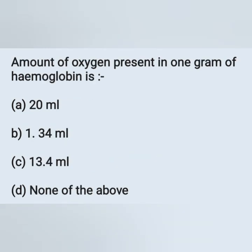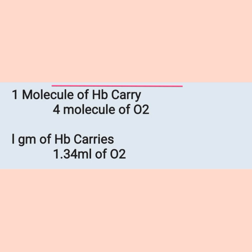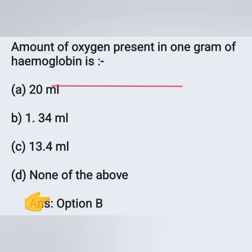Next question: amount of oxygen present in 1 gram of hemoglobin is? Options: A) 20 ml, B) 1.34 ml, C) 13.4 ml, D) none of the above. One gram of hemoglobin can carry 1.34 ml of oxygen. Also, 1 molecule of hemoglobin can carry 4 molecules of oxygen. The correct answer is option B, 1.34 ml.